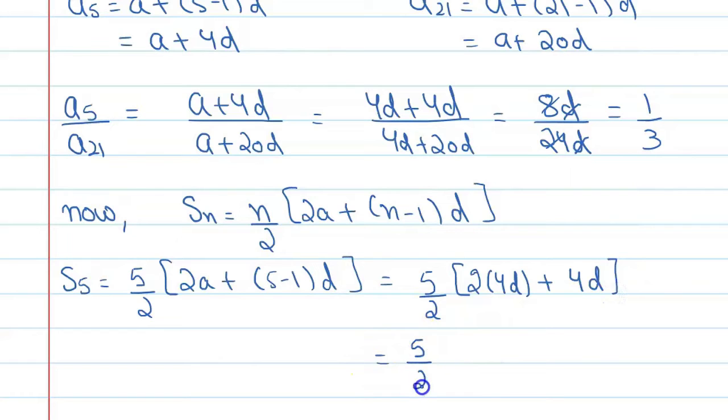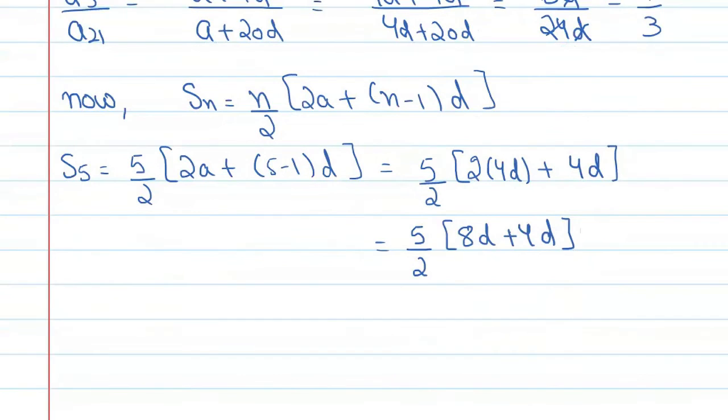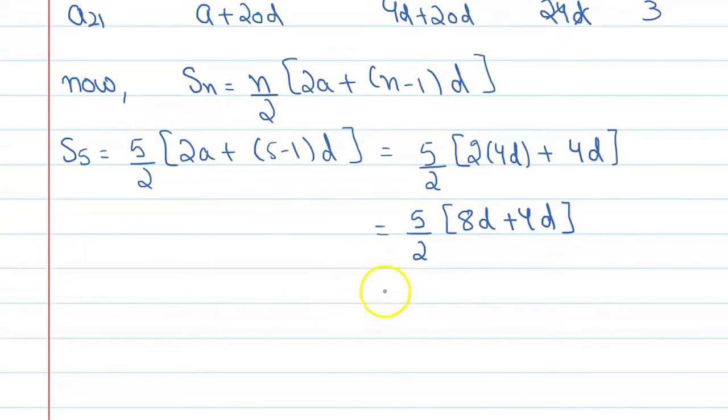Now here you will get 5 upon 2, this 2 into 4d plus 4d. Here you will get s5 equal to 5 into 12d upon 2. Cancel it, this is 6, this is 30d.